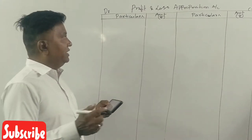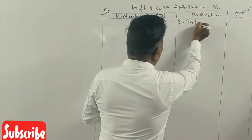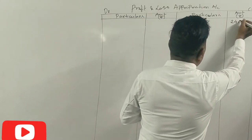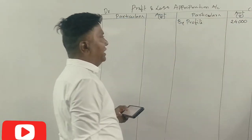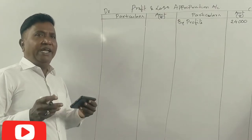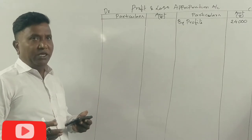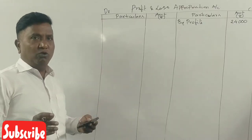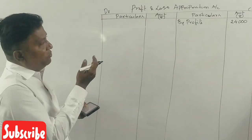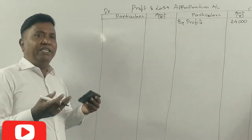What are the Profit and Loss Appropriations Account? The profits available are shown in this account. What do we have to prepare and how do we prepare the Profit and Loss Appropriations? These profits are adjusted — that means these profits are adjusted.